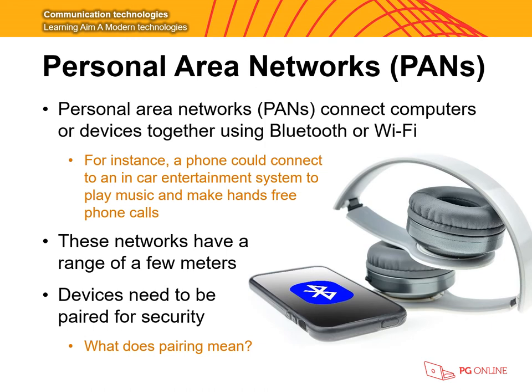PANs, or personal area networks, are networks that can connect computers or devices together using Bluetooth or Wi-Fi. For instance, a phone could connect to an in-car entertainment system to play music and make hands-free phone calls. Another example is smart watches — such as an Apple Watch connected to an iPhone — which allows data such as messages or heart rate to be transferred between devices. These networks have a range of a few metres and are personal only to yourself. Devices need to be paired for security, which is a process that sets up an initial link between computing devices to allow communication.